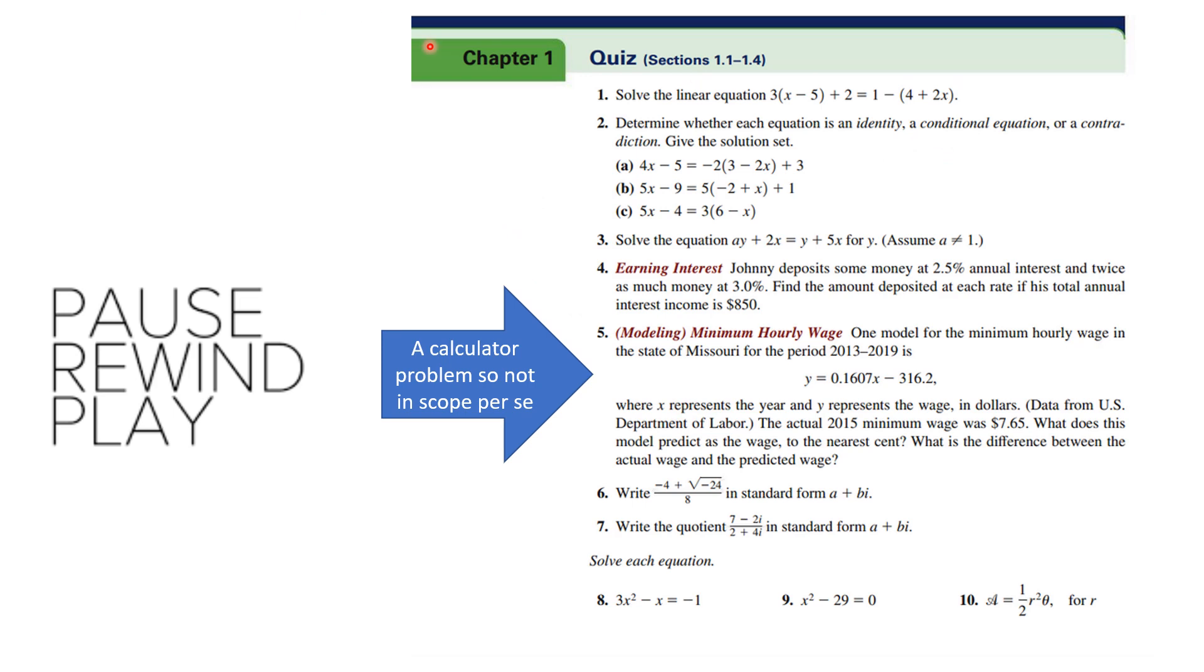We begin with the quiz over sections 1.1 through 1.4 in chapter one of your textbook, and the quiz has 10 problems on it. One of them is a calculator problem, so number five is not in our course scope, and I encourage you to try these before you watch the solutions. The solutions will be more meaningful for you that way.